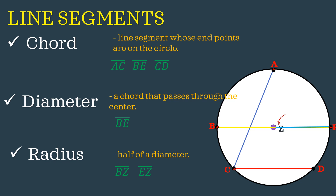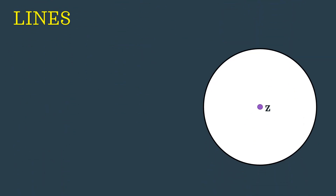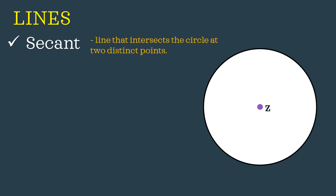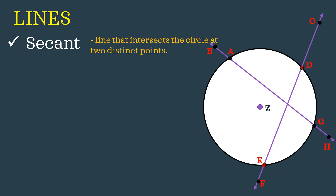Aside from line segments, we have lines related to our circle, and we have two. The first one is known as the secant line — a line that intersects the circle at exactly two distinct points. So there were two points intersected by our line. Naming this, since a secant is a line, we use the symbol for line. In this figure, the secants are line BH and also line CF.